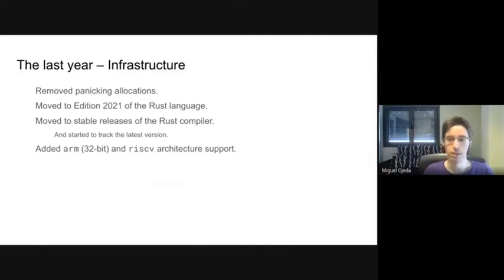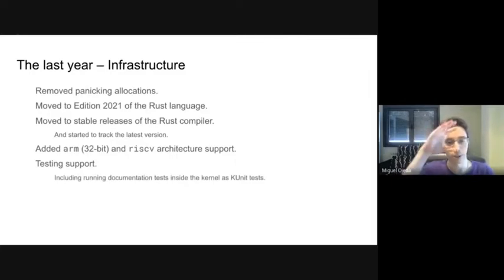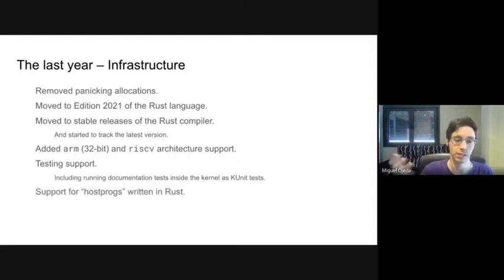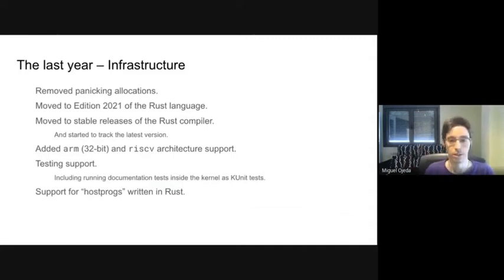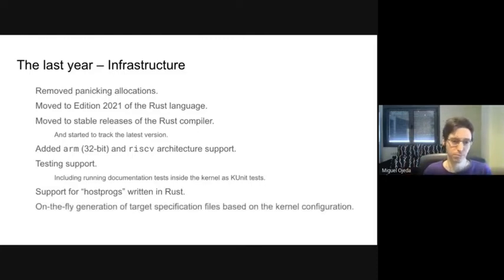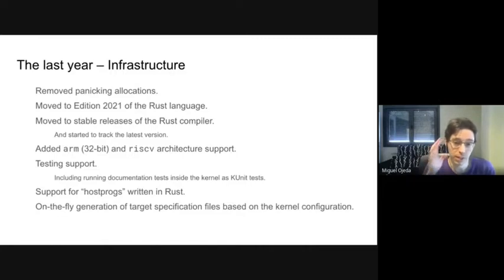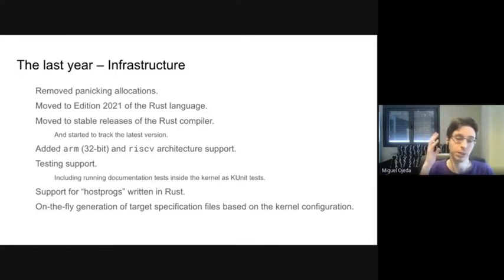We got further architecture support and some testing support as well. We can now run documentation tests — code written in the documentation is tested and run inside the kernel as KUnit tests. We also got support for host programs in Rust, which are utility programs used for various tasks outside the main compilation. Additionally, we got on-the-fly generation of the target specification file based on the kernel configuration, which tells the Rust compiler how to compile for a given target. We are working with upstream to improve this further, as it is currently an unstable part.